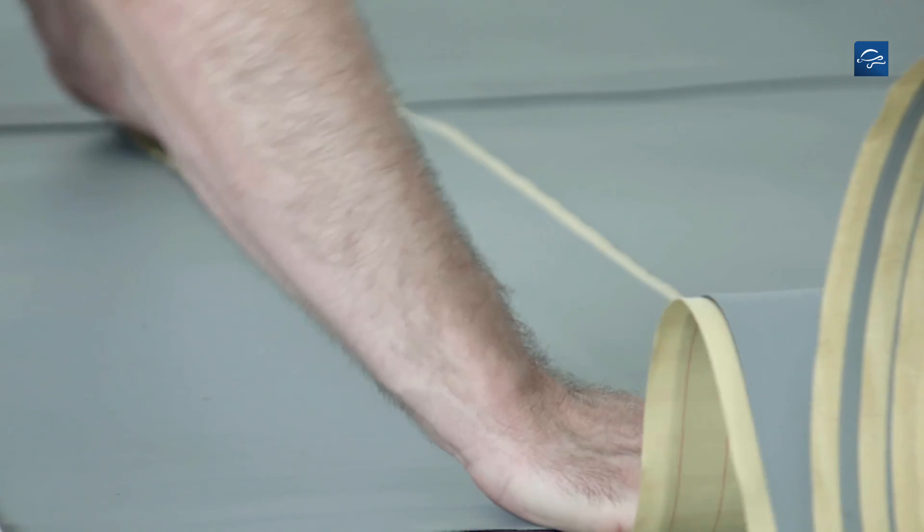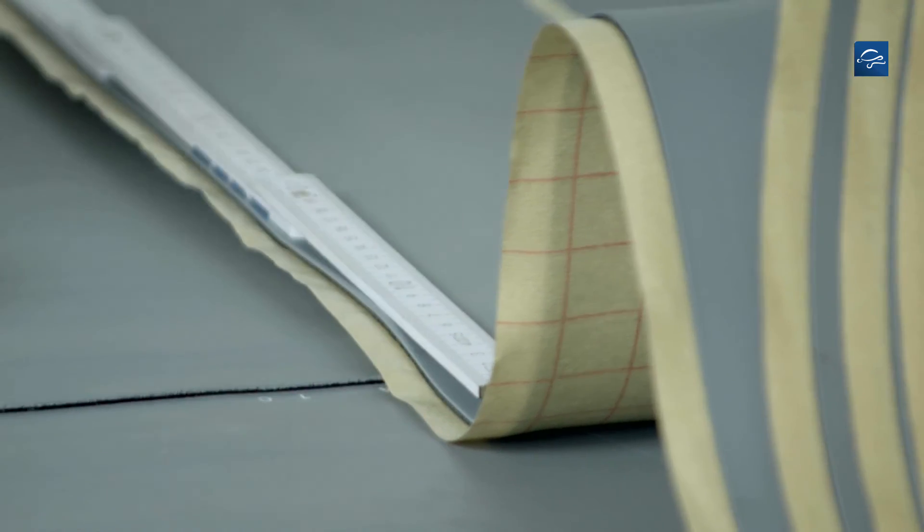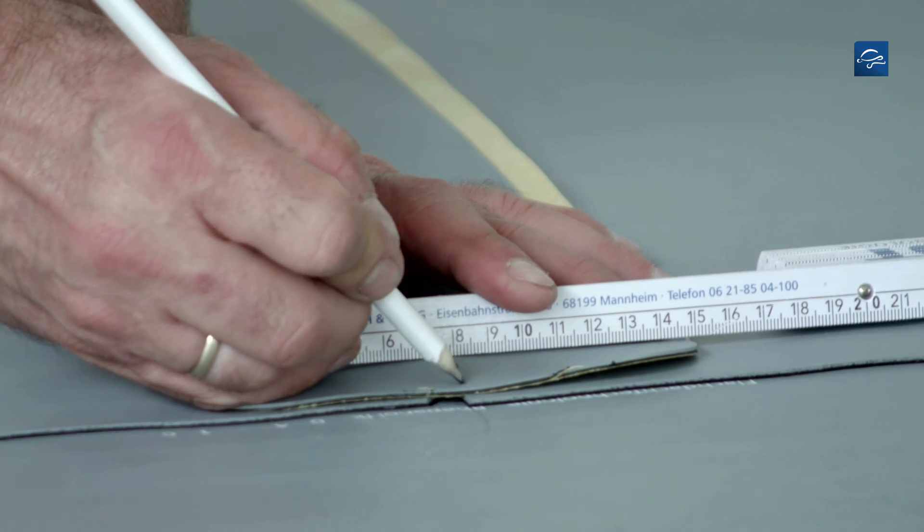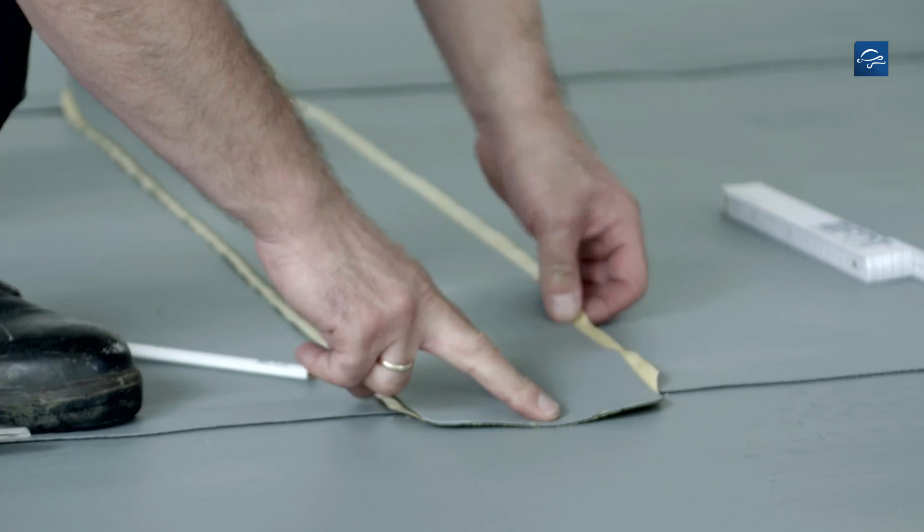Cut to size a 10 or 15cm wide Repanol cover tape to cover all seams by at least 5cm. The corners need to be rounded off. Marking the center of the cover tape will facilitate subsequent positioning.